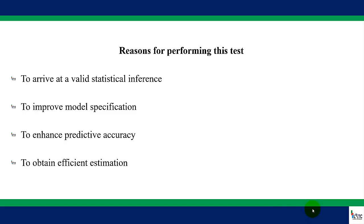Take note that the classical linear regression model assumes that the error terms are independent of each other — that is, they are not correlated. When there is a problem of serial correlation, this assumption will be violated. And when this assumption is violated, the standard errors of the coefficients will be incorrect, leading to misleading statistics as well as incorrect confidence intervals, which invalidates your statistical inference.